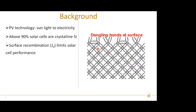Surface recombination is mainly caused by dangling bonds at the surface of silicon wafers. J0 is the recombination current density parameter, which is generally used to indicate the quality of surface passivation. A high J0 value suggests that surface recombination is high or surface passivation is low. To improve surface passivation, we commonly apply passivation layers such as silicon oxide, silicon nitride, or amorphous silicon films directly on the silicon wafers.